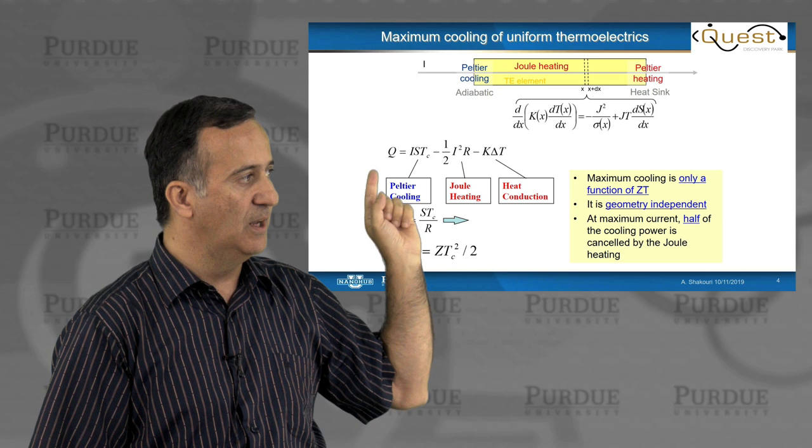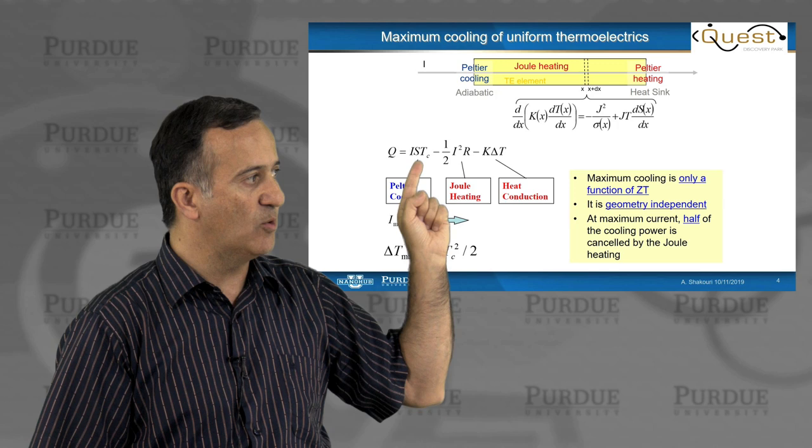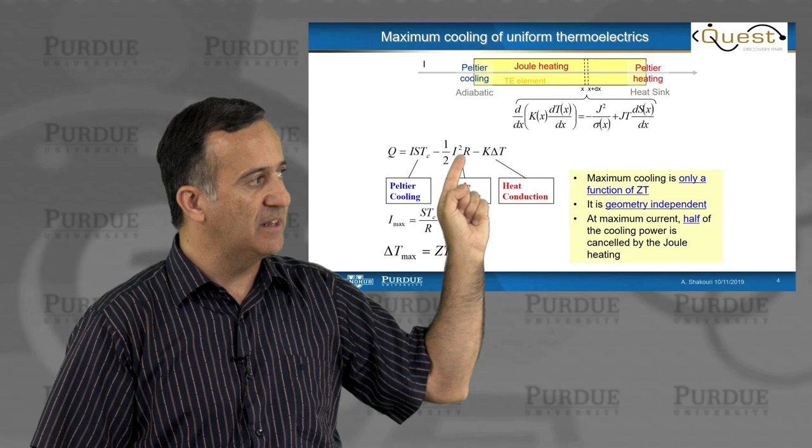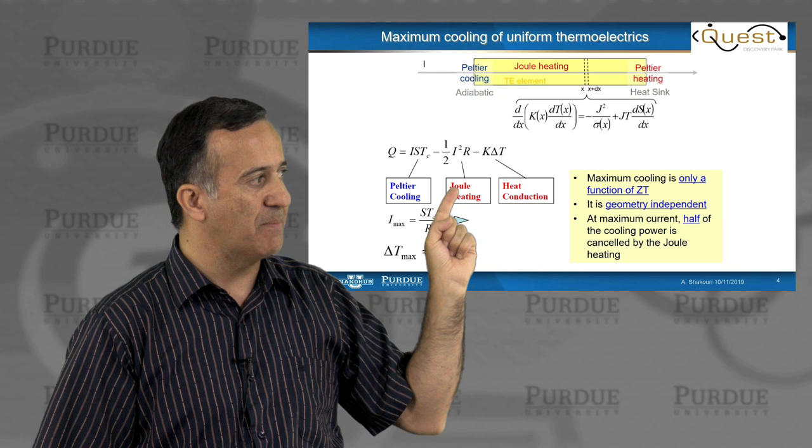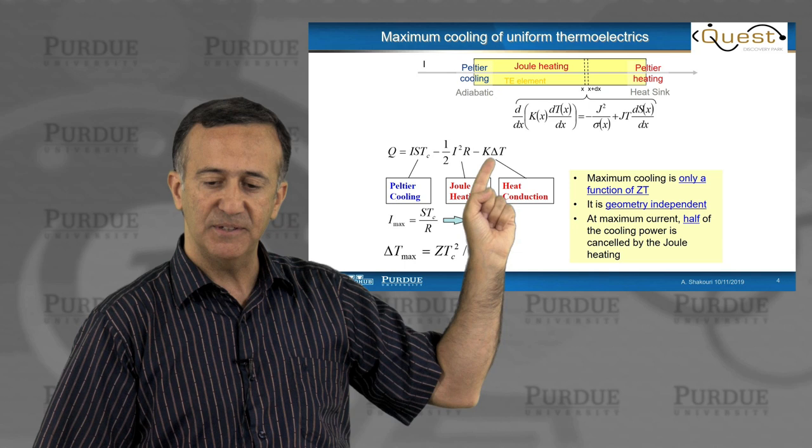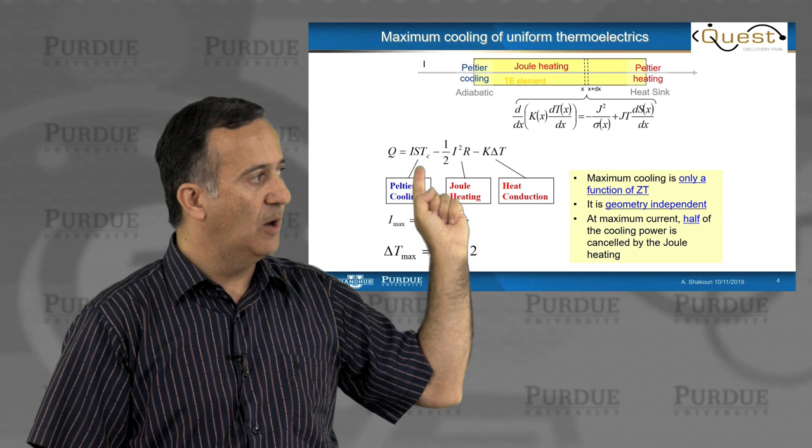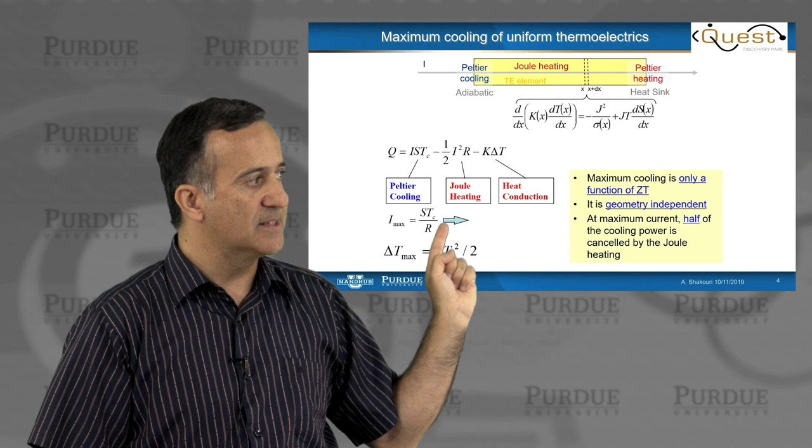And the solution of this differential equation gives you this. The net amount of cooling, Q, is given by the Peltier cooling. This is the Seebeck coefficient times temperature at the cold side. That's the Peltier coefficient times current. We already knew that. What's interesting is by doing the balance of the joule heating over the whole structure, when the material is uniform, half of the heat goes back to the cold side. That's the famous one-half factor. And then the temperature gradient needs to fight heat conduction, and now we have a term due to the heat conduction. This is the equation that gives you the net cooling for a given current and a given temperature difference.